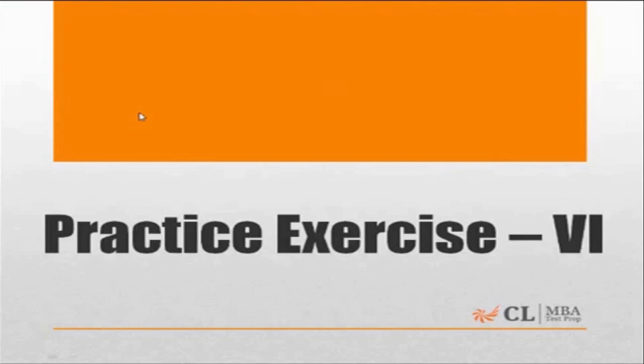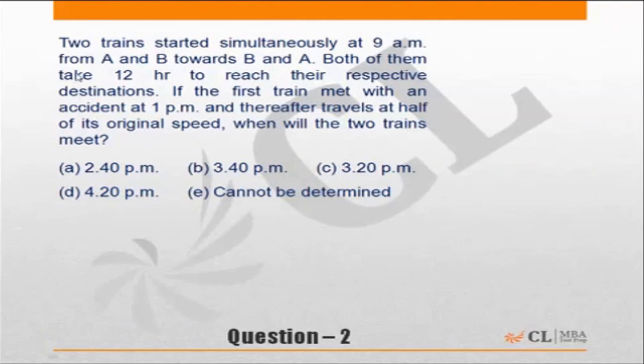Practice exercise 6 of time, speed, and distance. Question 2. Two trains started simultaneously at 9 a.m. from A and B towards B and A. Both of them take 12 hours to reach their respective destinations.